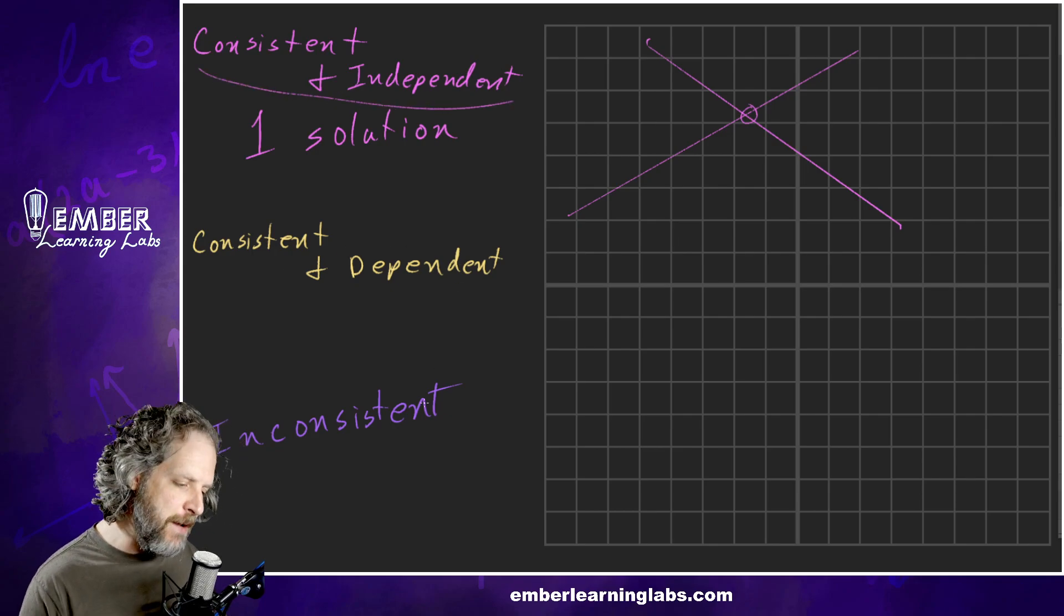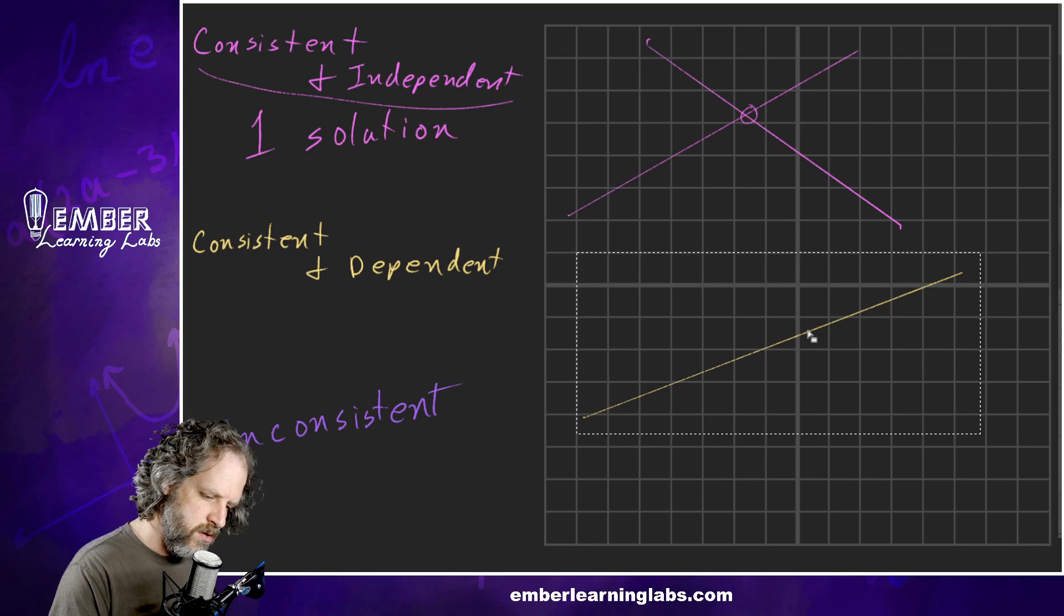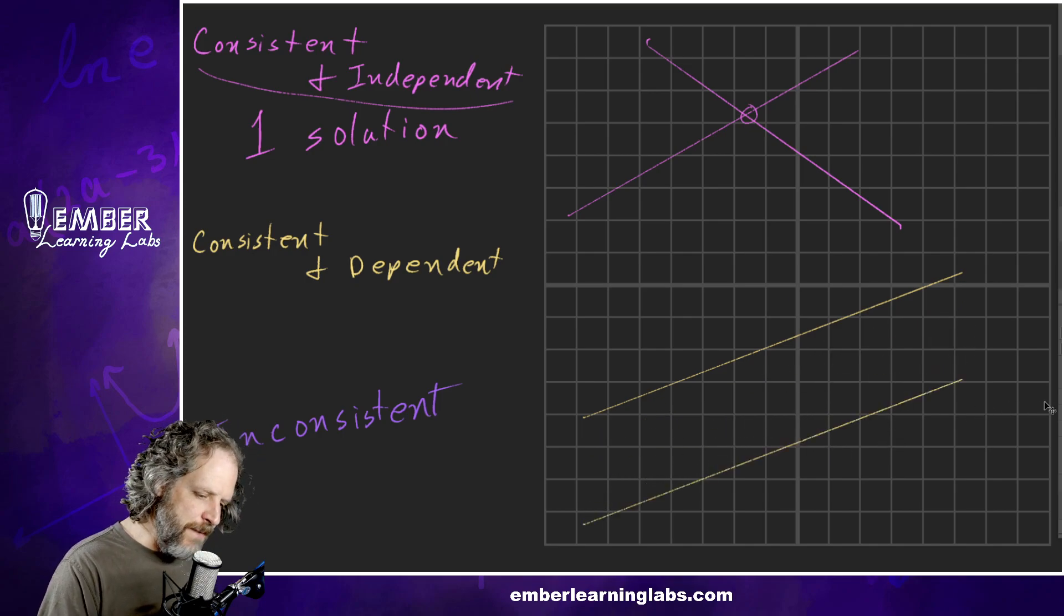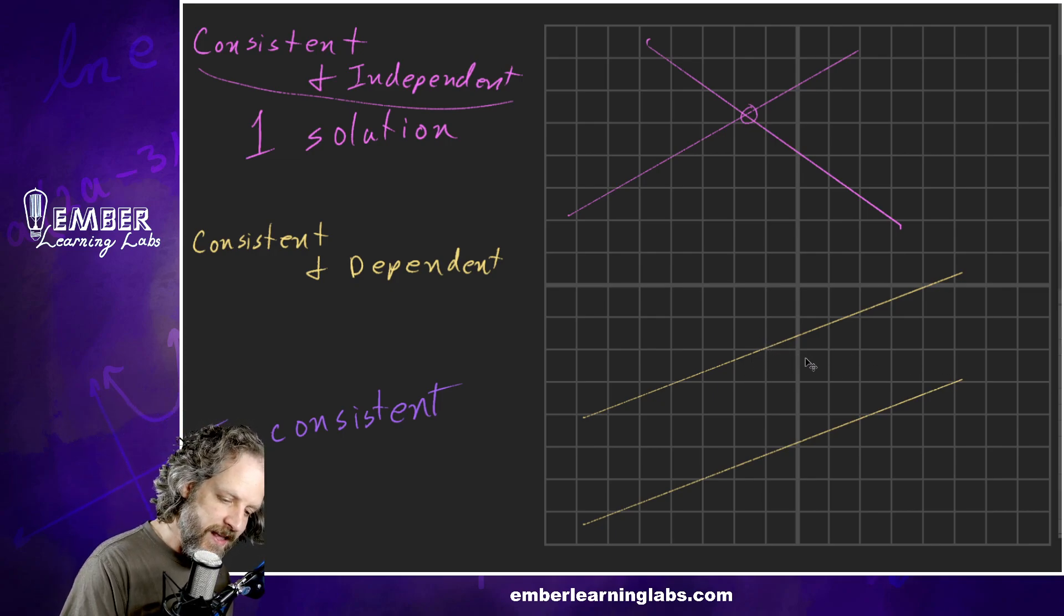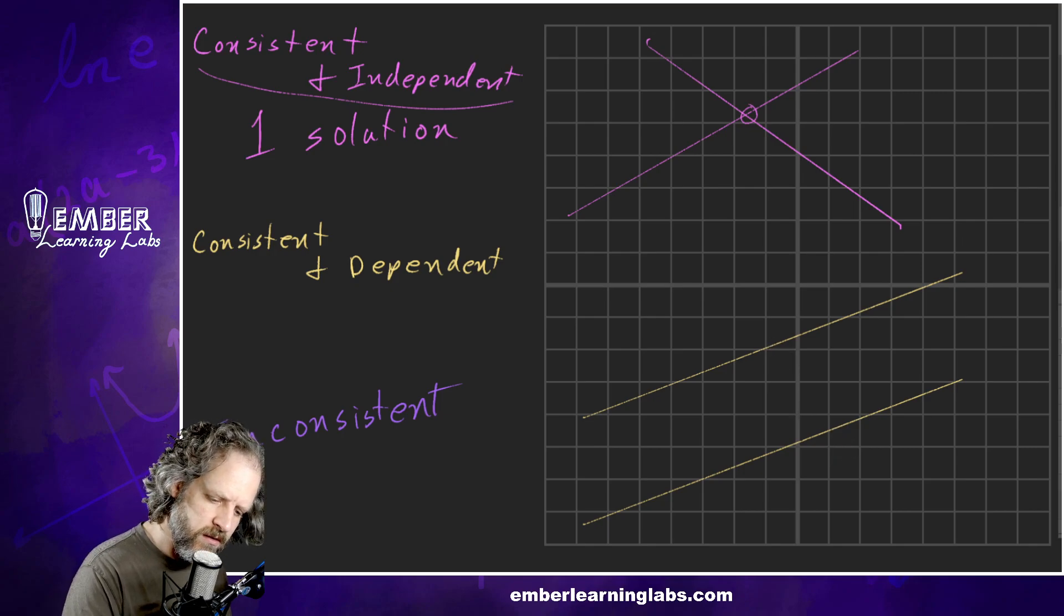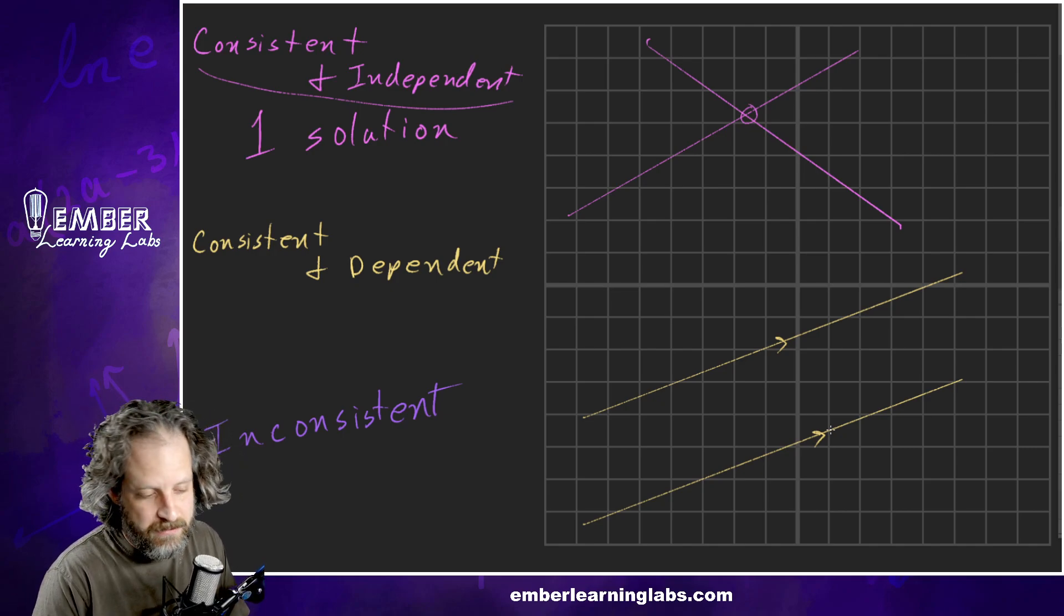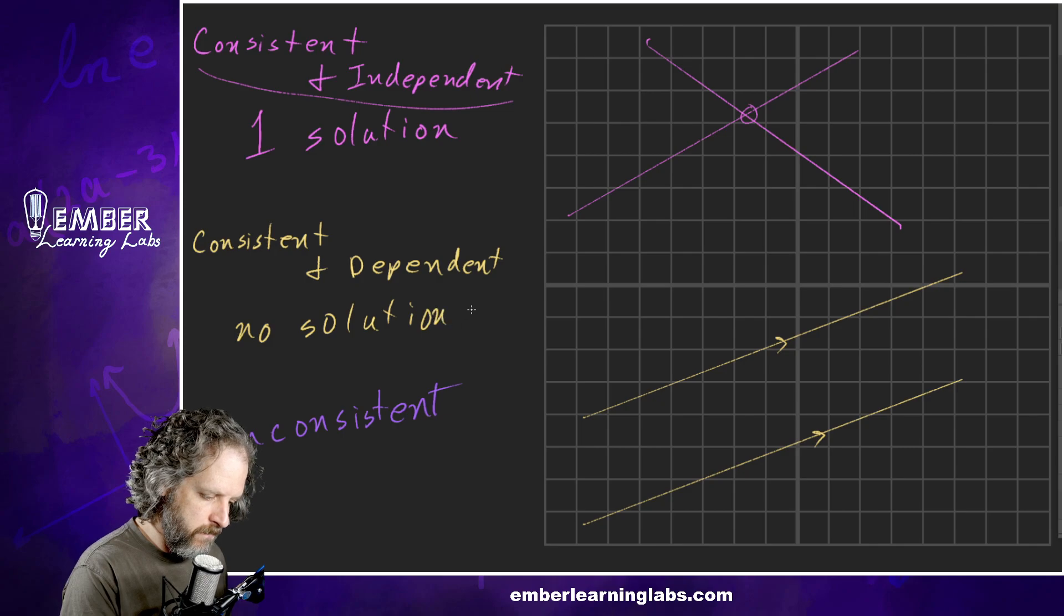What about consistent and dependent? Those two lines are parallel. And that means when do parallel lines touch? Never. So if these are parallel, there we go. So these two lines are parallel, and so since they're parallel, they never touch. So how many solutions does that system have? It has no solutions.